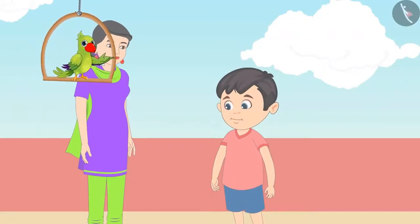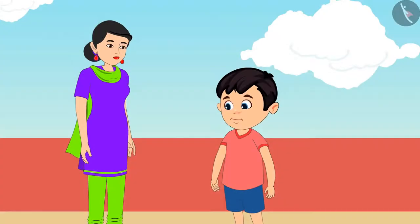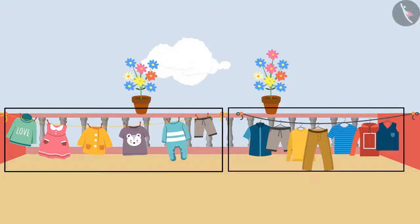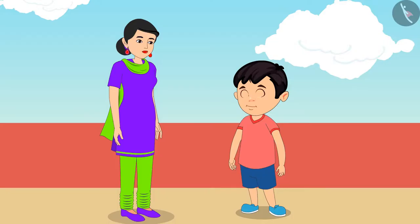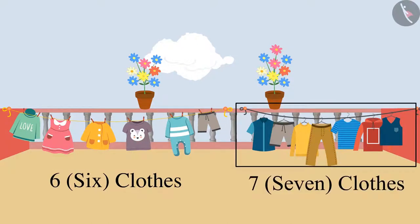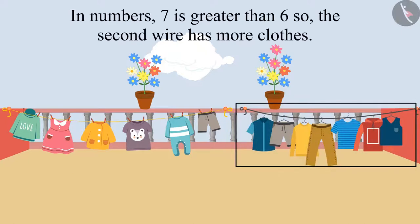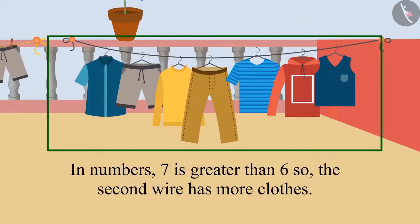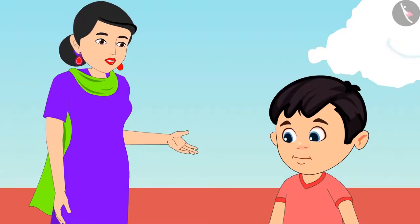Now Chotu and his mother are going to collect the dried clothes from the terrace. Chotu, can you tell me which one of these two wires has more clothes on them? Hmm, there are 6 clothes on this wire and 7 clothes on that wire. In numbers, 7 is more than 6. Therefore, there are more clothes on the second wire. Very good Chotu, you are absolutely right.